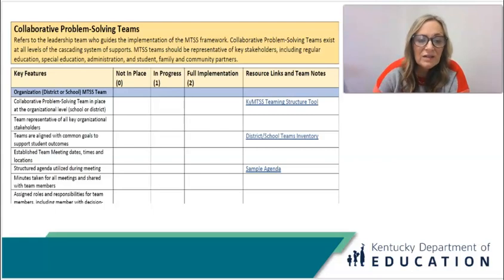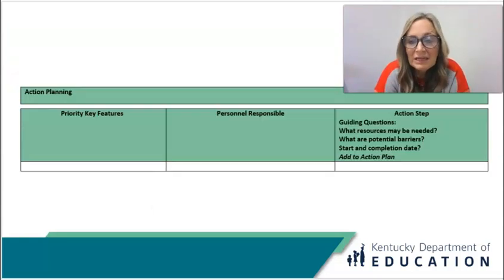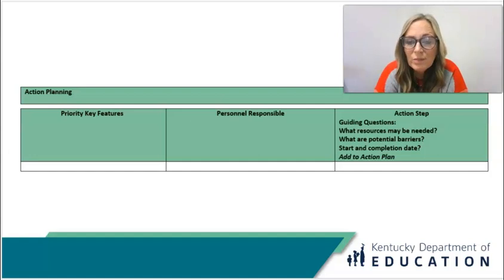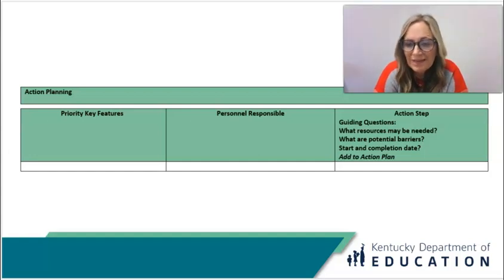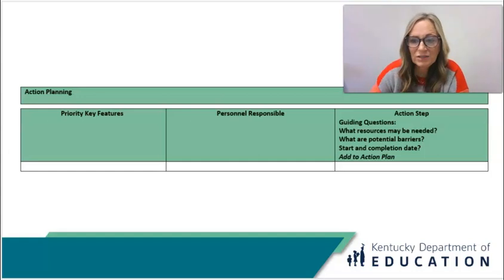At the end of each essential element is a mini action planning section, where teams can discuss what are the priority key features for this time as we are working on our implementation framework. They can talk about the people responsible, and then there are guiding questions for action step planning.